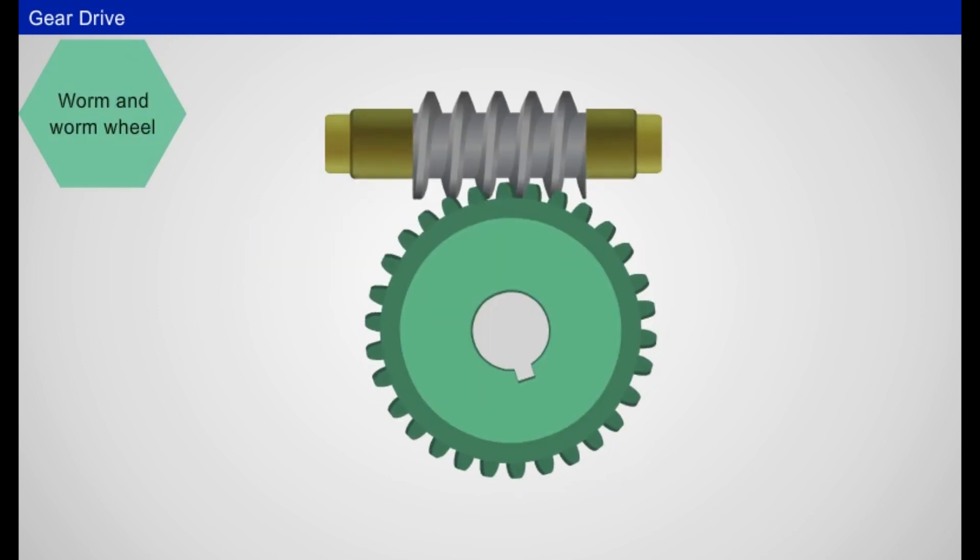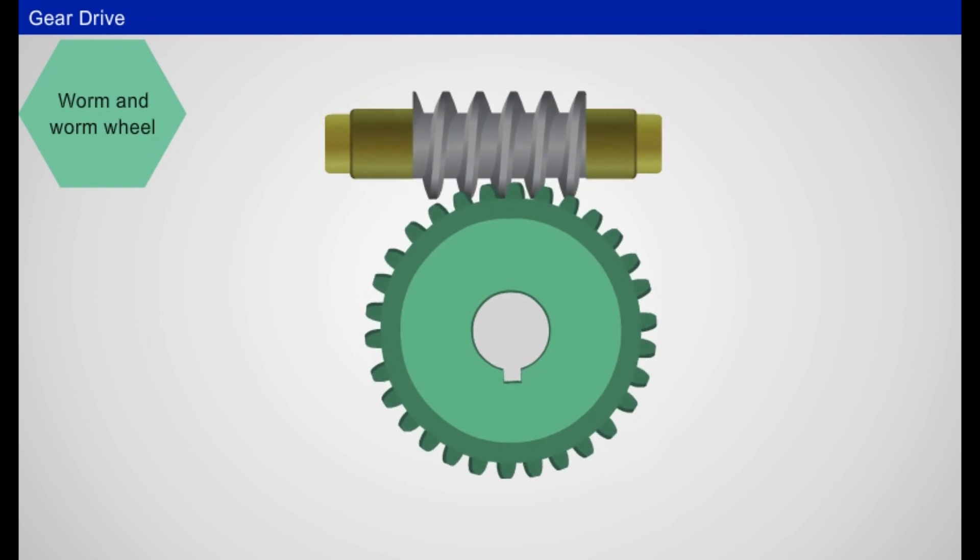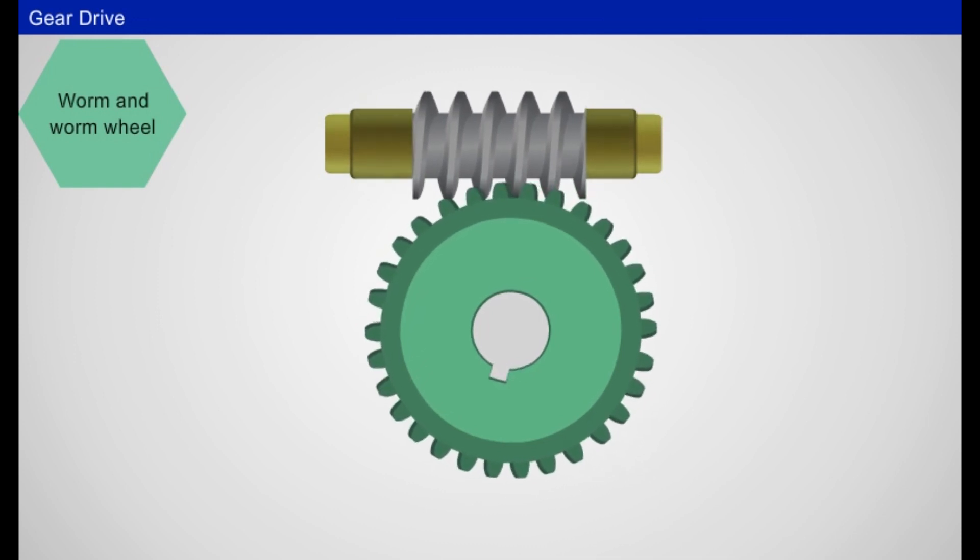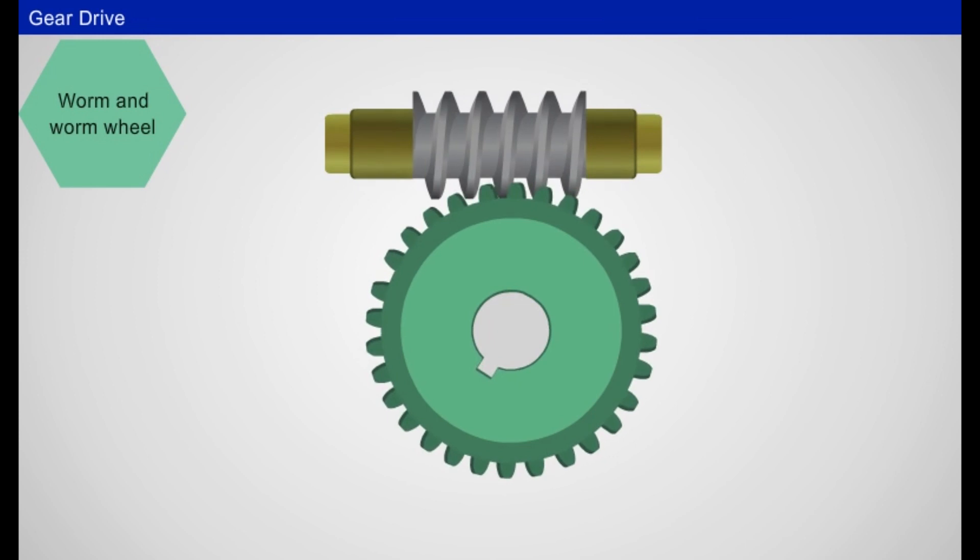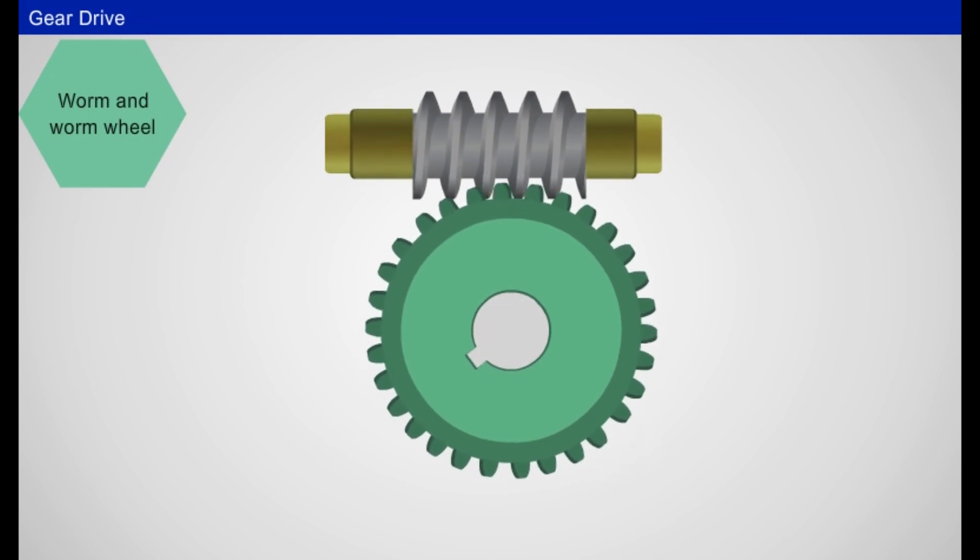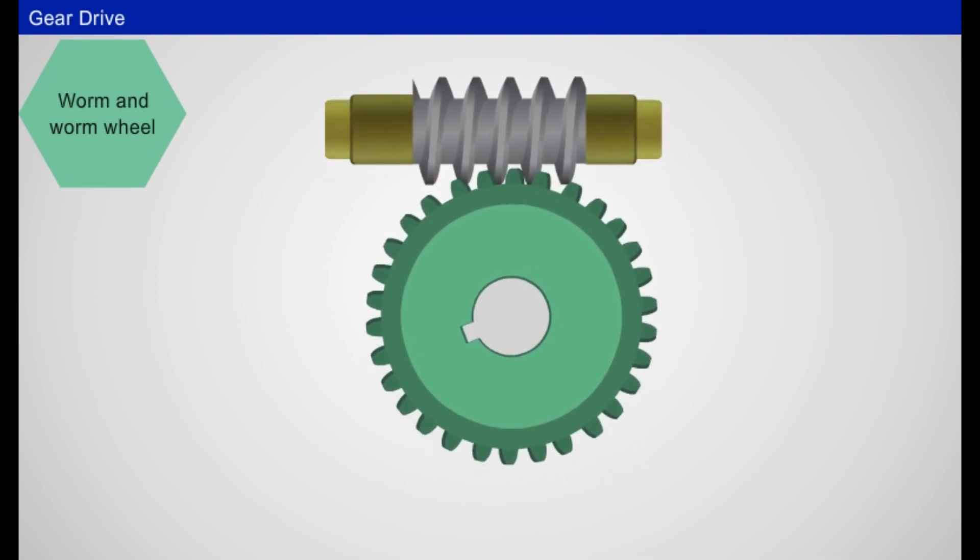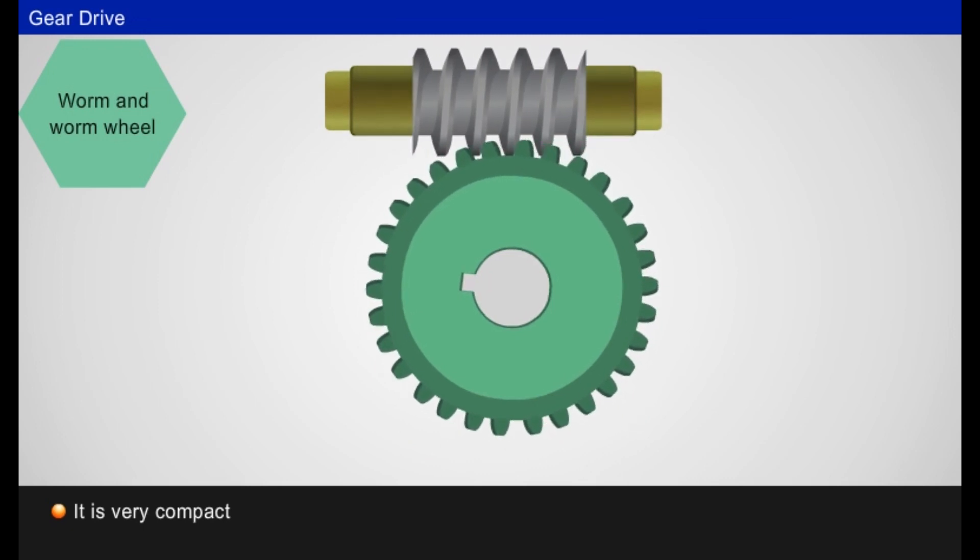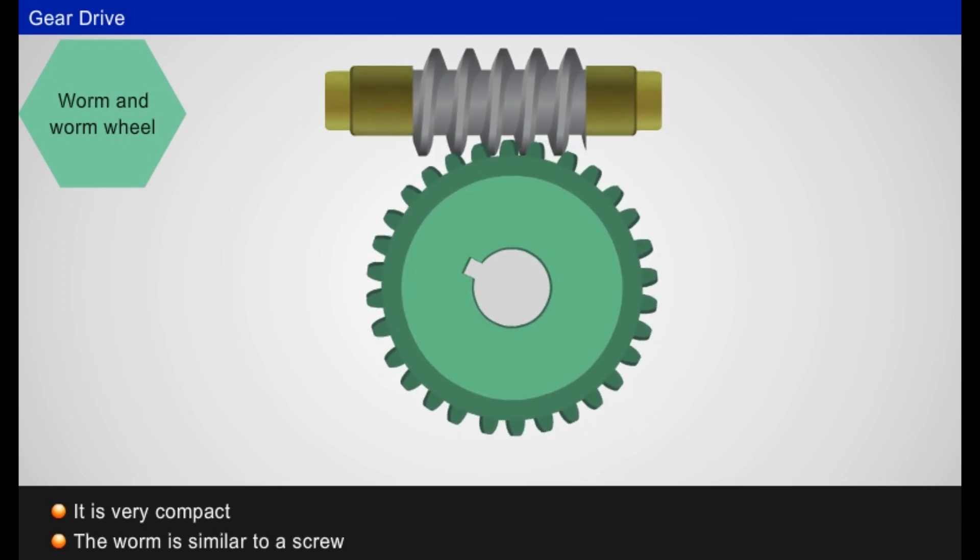Worm and worm wheel: It is used to transmit power between two non-intersecting shafts, which are at right angles to each other. They are very compact compared to other gears. The worm is similar to a screw.